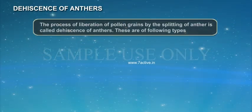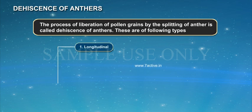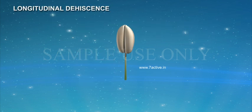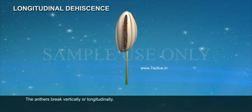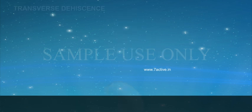Dehiscence of Anthers. The process of liberation of pollen grains by the splitting of the anther is called dehiscence of anthers. These are of the following types: 1. Longitudinal, 2. Transverse, 3. Valvular, 4. Porous. Longitudinal Dehiscence: the anthers break vertically and longitudinally. Example: Datura.